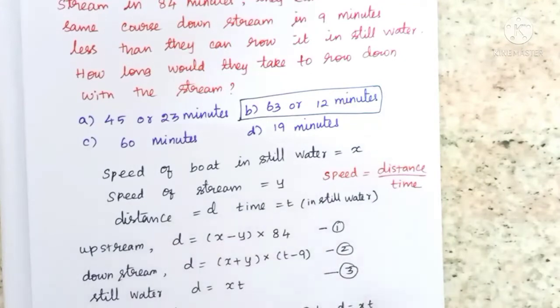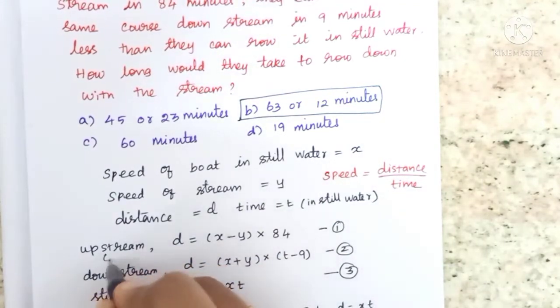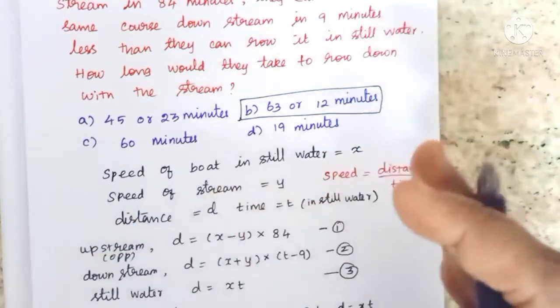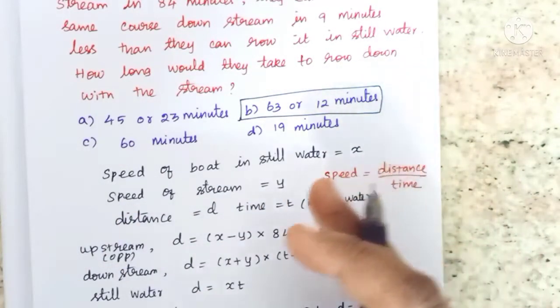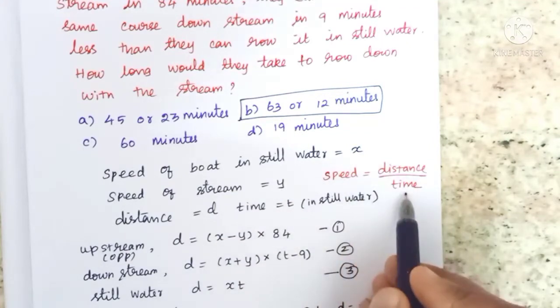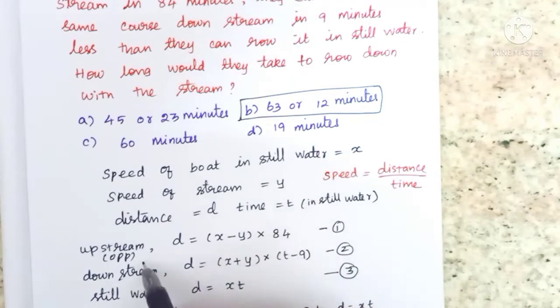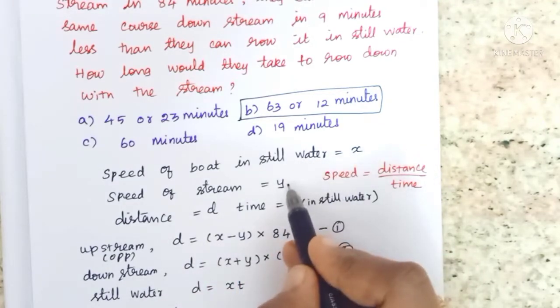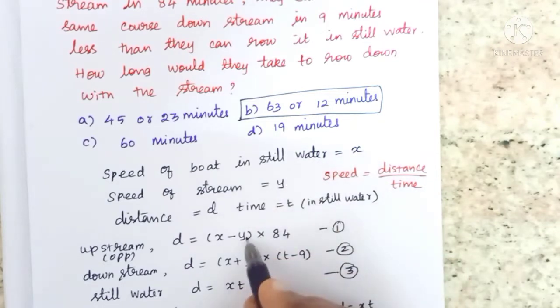Speed equals distance by time. Distance equals speed into time. At the speed of the boat, we reduce the speed of the stream, so we get x minus y into the time of 84 minutes.